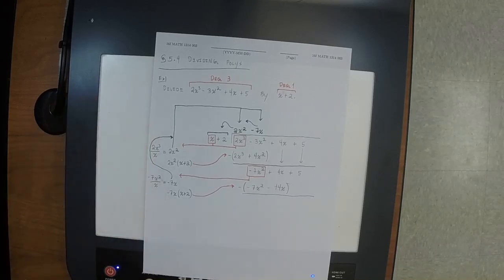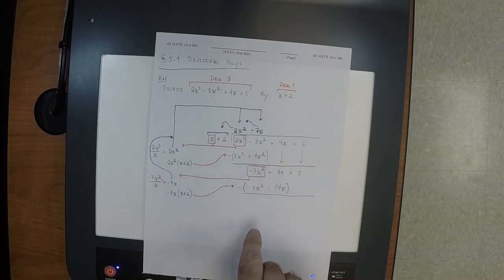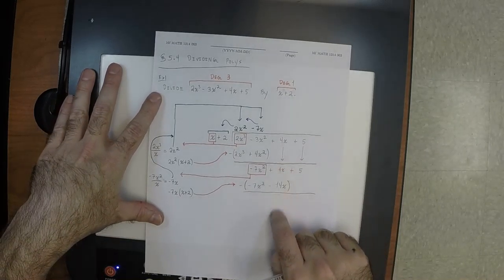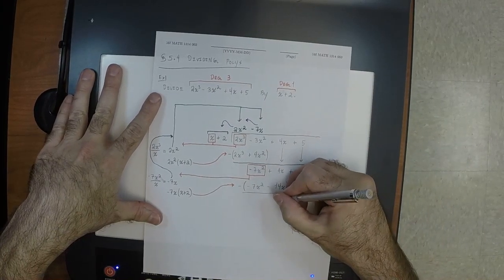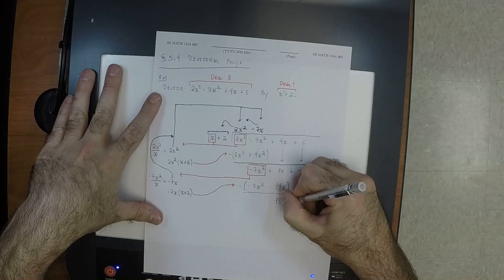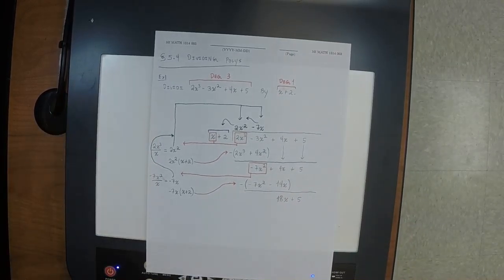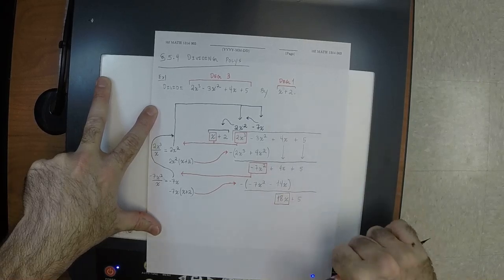We subtract those terms. When this subtraction is complete there will be no more x² terms — we're finished with all degree-2 terms. The degree-1 terms that remain: 4x − (−14x) = 18x, plus the constant 5.